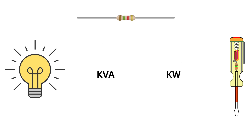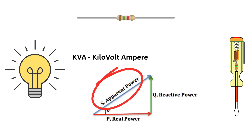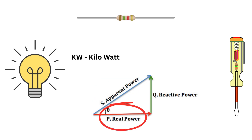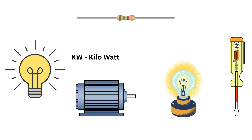First, we have to understand the units KVA and KW. KVA stands for KiloVolt Ampere — it's the unit of Apparent Power. KW stands for Kilowatt, that's the real power consumed or delivered. In simple terms, Kilowatt is the power that actually does the work, like turning a motor or lighting a bulb.